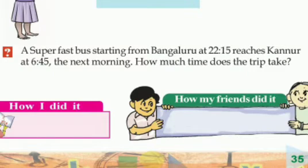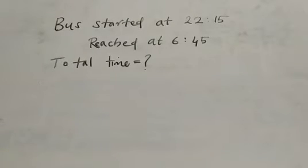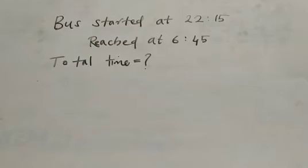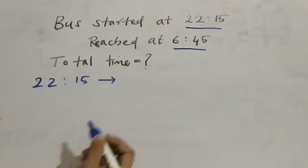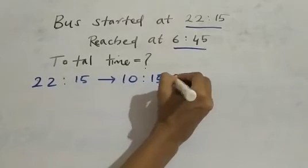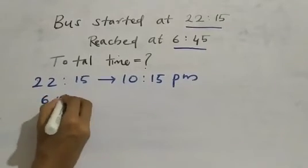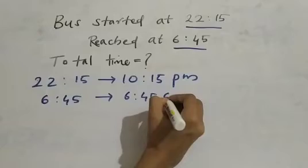Let us do this activity — it is the same as the previous one. A super fast bus starting from Bangalore at 22:50 reaches Kannur at 6:45 the next morning. This is also in the 24-hour system. 22:50 means PM — that is in the night — and 6:45 AM in the morning. How much time does the trip take? You want to find the total time. 22:15 in 12-hour system means 10:15 PM.